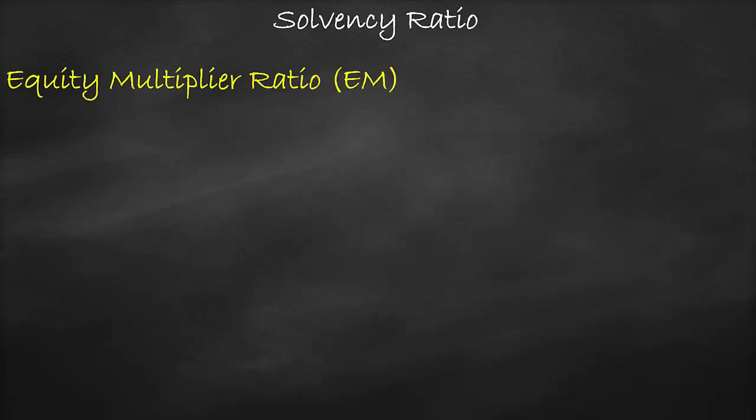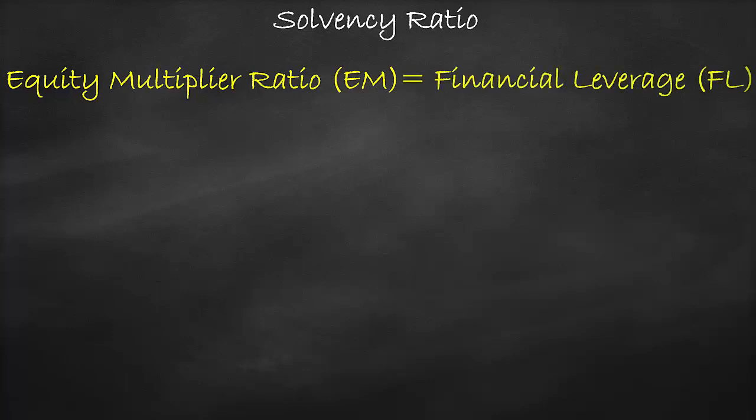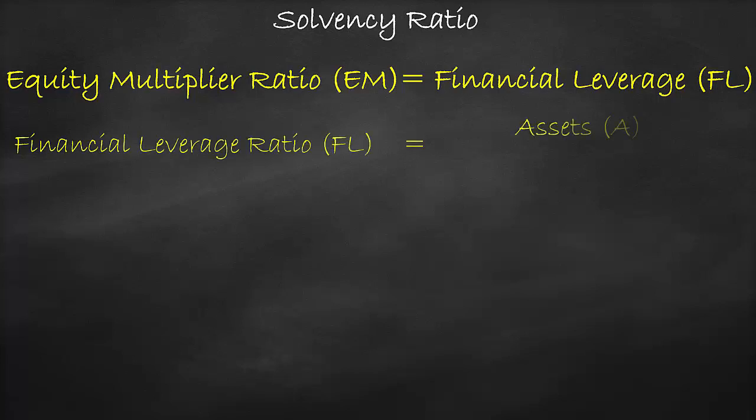An example of the solvency ratio is the equity multiplier ratio, which is also known as the financial leverage ratio. The financial leverage ratio formula is total assets divided by total shareholders' equity. We can get both the assets and the equity from the balance sheet.